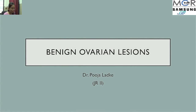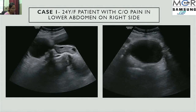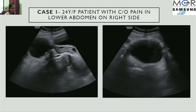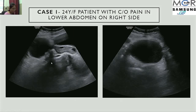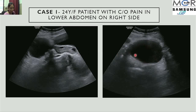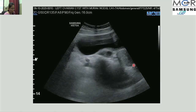Now showing a few cases of benign ovarian lesions. Case 1: a 24-year-old female came with pain in the lower abdomen on the right side. A well-defined anechoic cystic lesion less than 10 centimeters in size was seen arising from the right ovary. A few follicles were present in the right ovary. The same lesion measuring less than 10 centimeters was confirmed as anechoic on color scan.